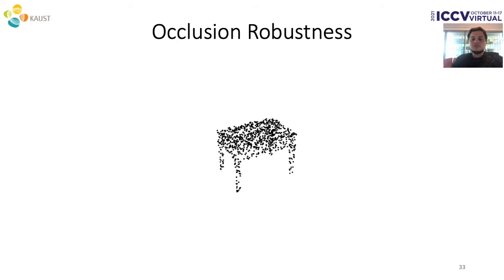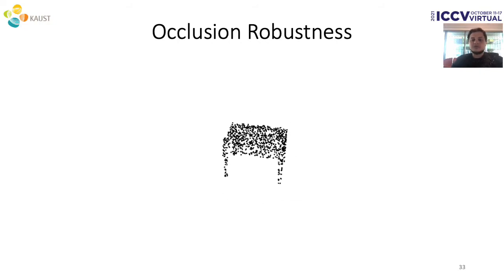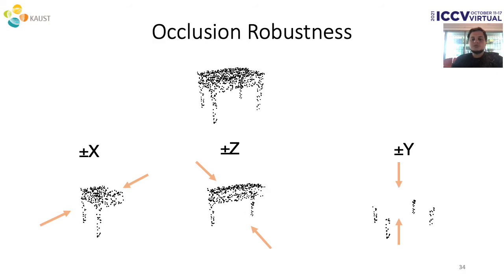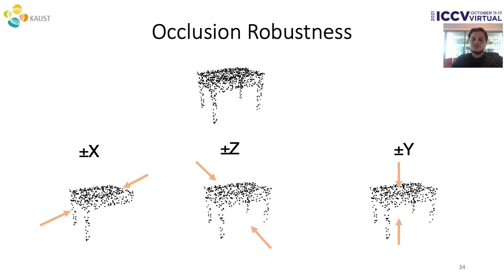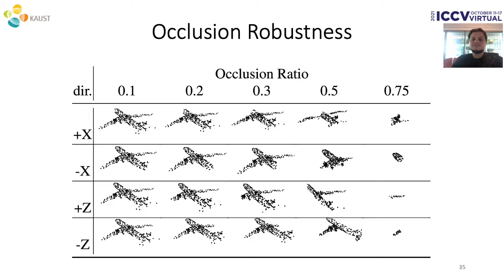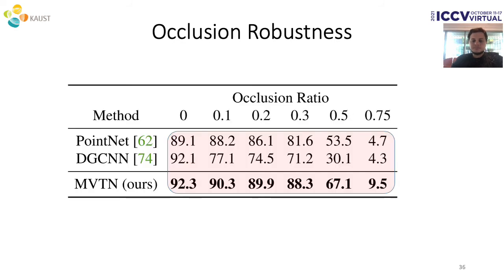Another robustness aspect we study is occlusion, which is an important factor that affects scanned data. To simulate occlusion, we crop the object from its 6 faces with different percentages from 0–75%, and from different directions. Here we show how the objects are affected by cropping them with different occlusion ratios and from 4 different canonical directions. These occlusions are introduced at test time. We show the average test accuracy on ModelNet40 over the 6 canonical occlusion directions — plus-minus-x, plus-minus-y, and plus-minus-z — for different occlusion ratios. MVTN shows more robustness in this setup than the baselines.